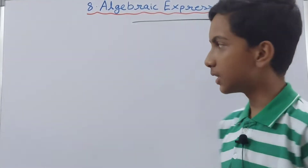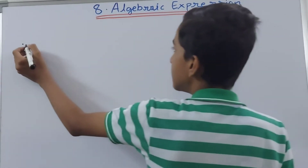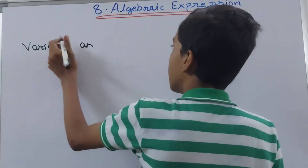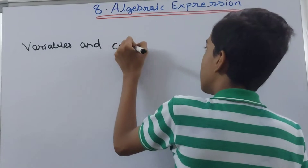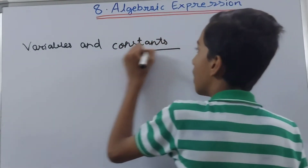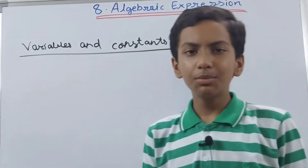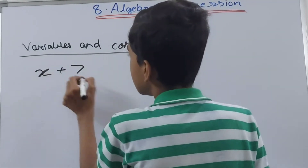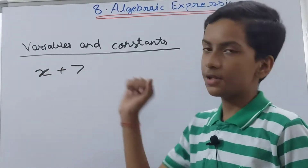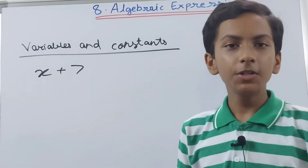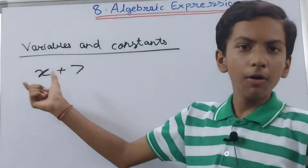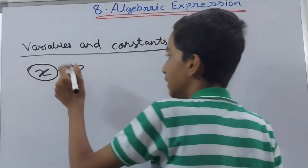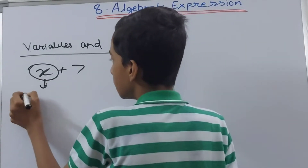The first thing we need to know about is variables, and the second is constants. These are the two things which make up an algebraic expression. Suppose I take the expression x plus 7. In this, the variable is x — it is an alphabet which does not have a fixed value. We don't know the value of x, so x is our variable.